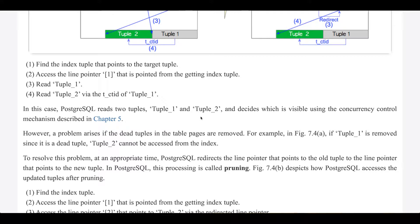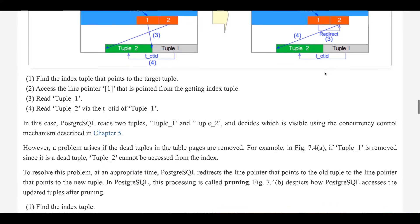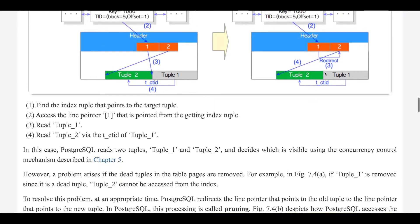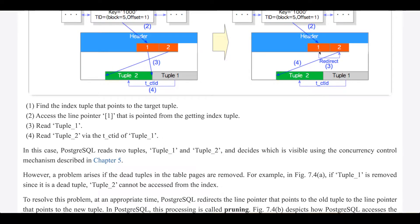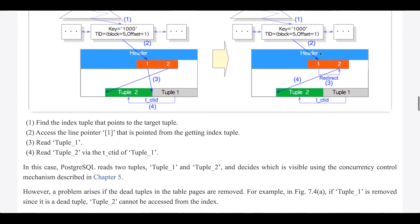To resolve this problem, at an appropriate time, Postgres redirects the line pointer that points to the old tuple to the line pointer that points to the new tuple. In Postgres, this process is called pruning. Figure 7.4b depicts how Postgres accesses the updated tuples after pruning.